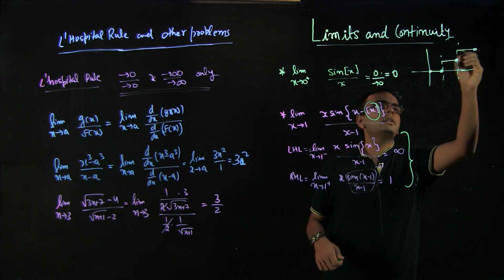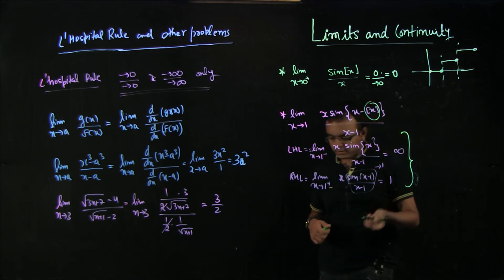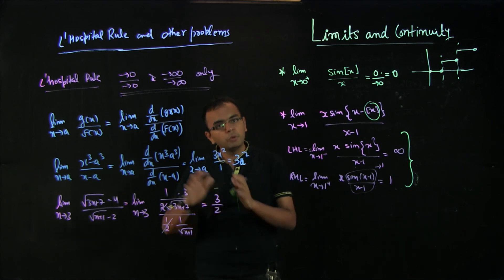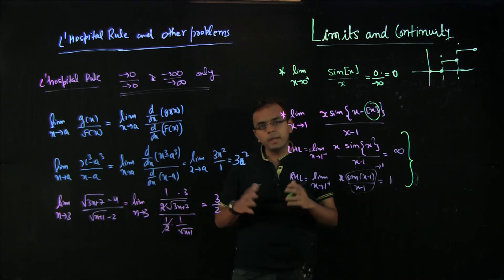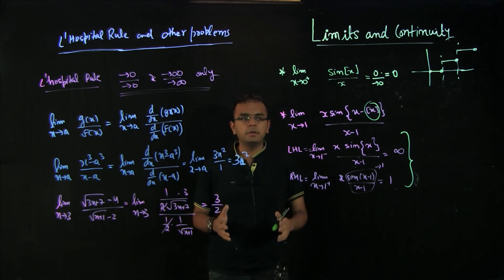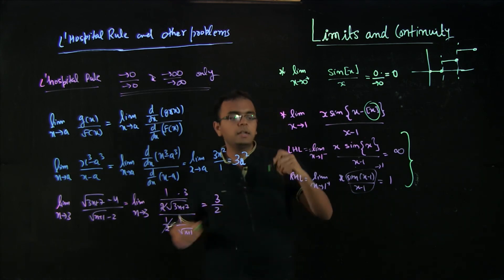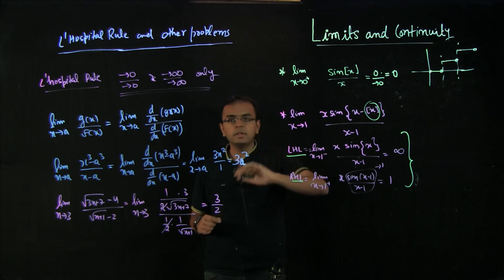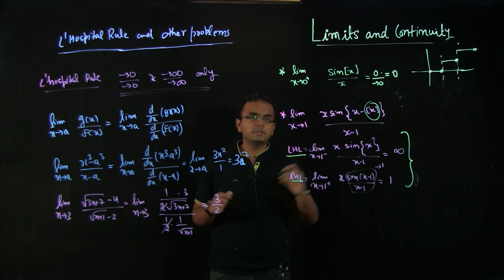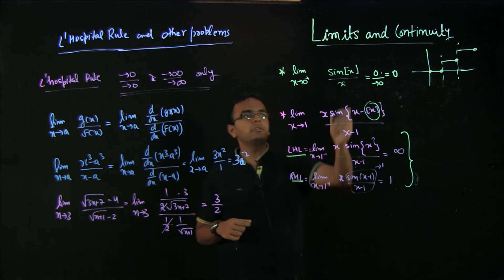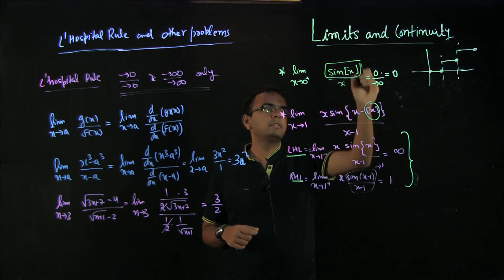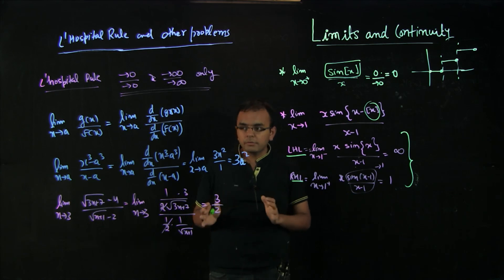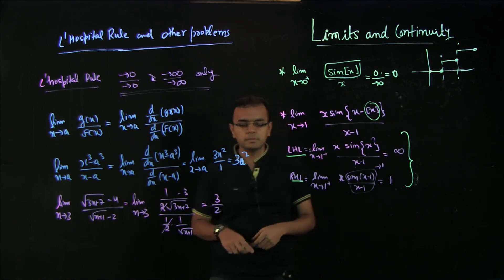The idea here is basically that whenever you see functions like greatest integer of x, you should try to evaluate both left hand limit and right hand limit. That will help you evaluate the final limit properly because left hand limit and right hand limit could be different or could be same. Please evaluate both the limits rather than directly evaluating one limit. If you get something like sin of greatest integer of x, it is exactly 0 and not approaching 0. This was just some tricks which I think might be helpful if you come across such problems.